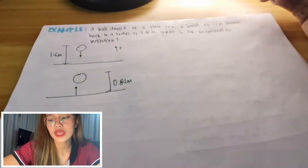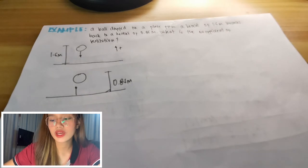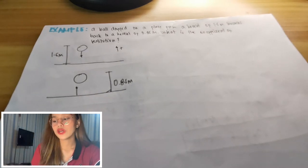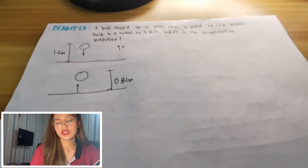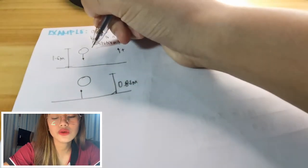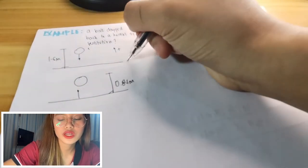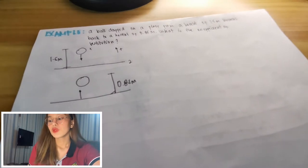This is it now. And the height when it bounced back is equal to 0.85 meters. So let's say the ball is object 1 and the floor is object 2.